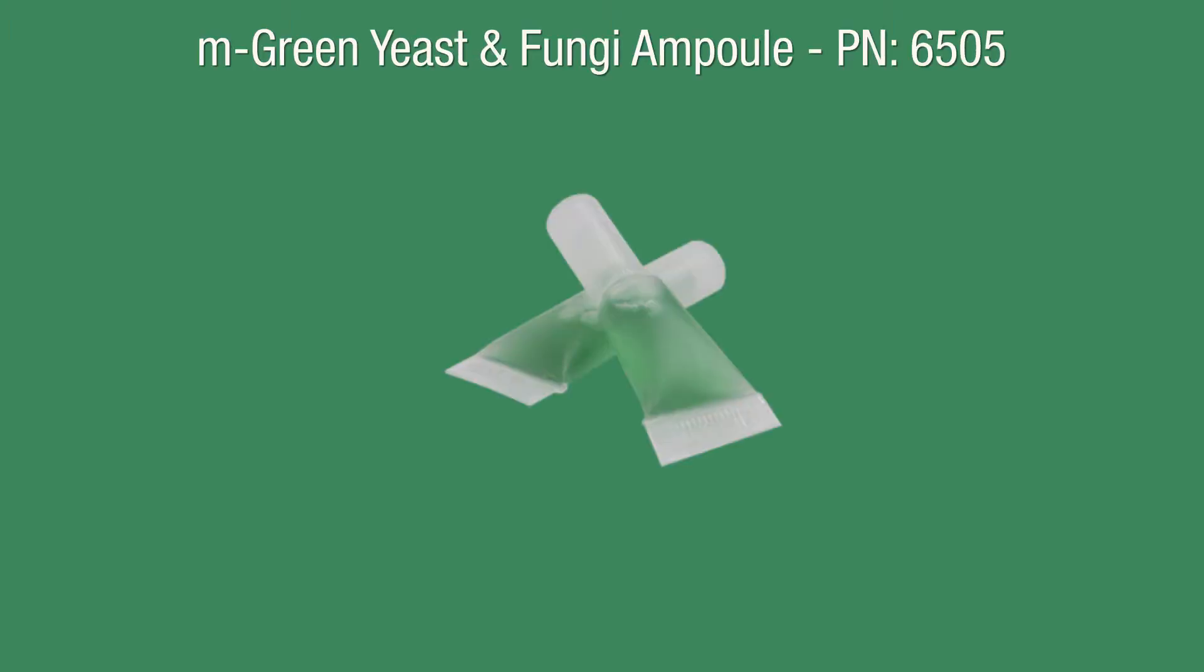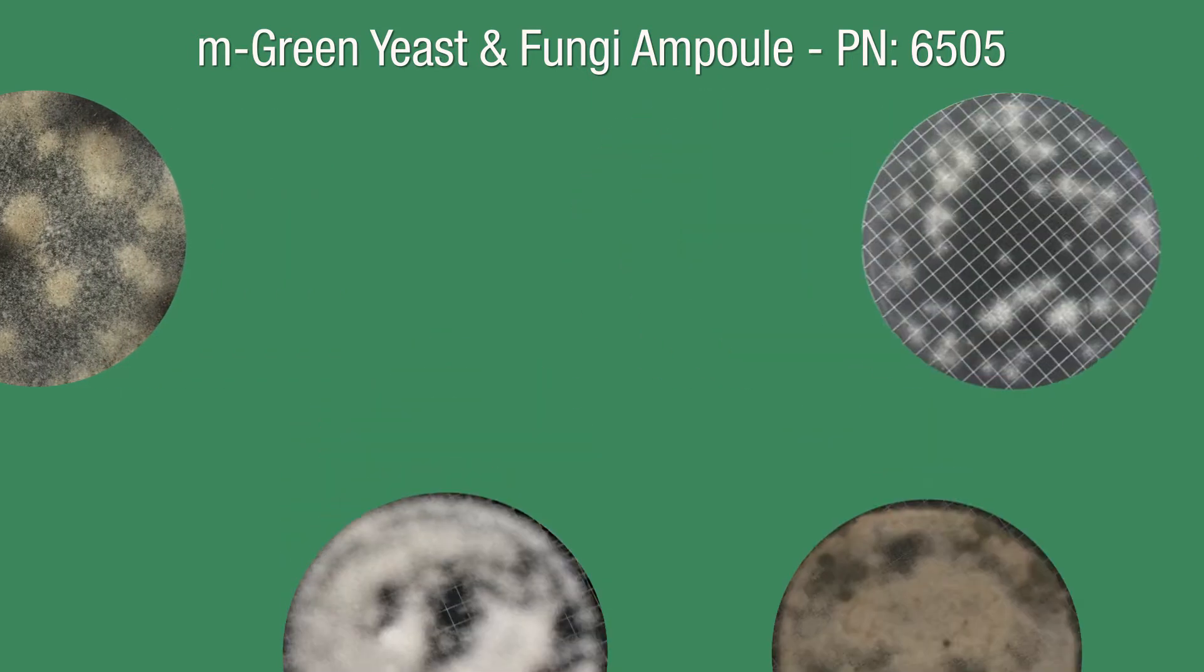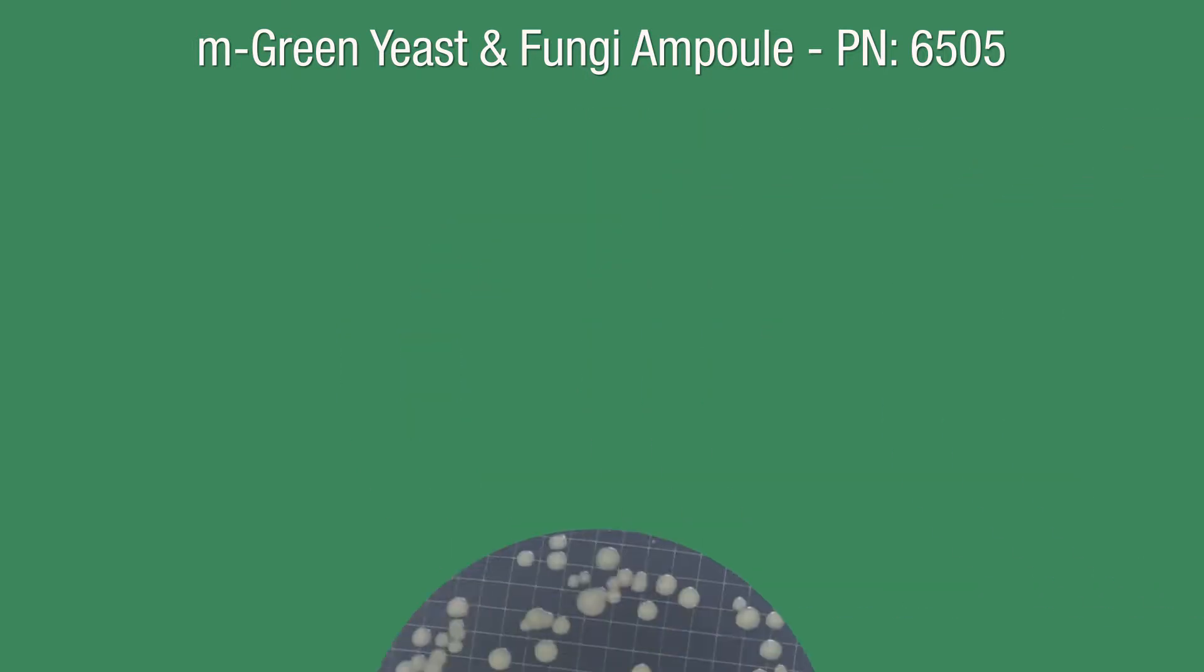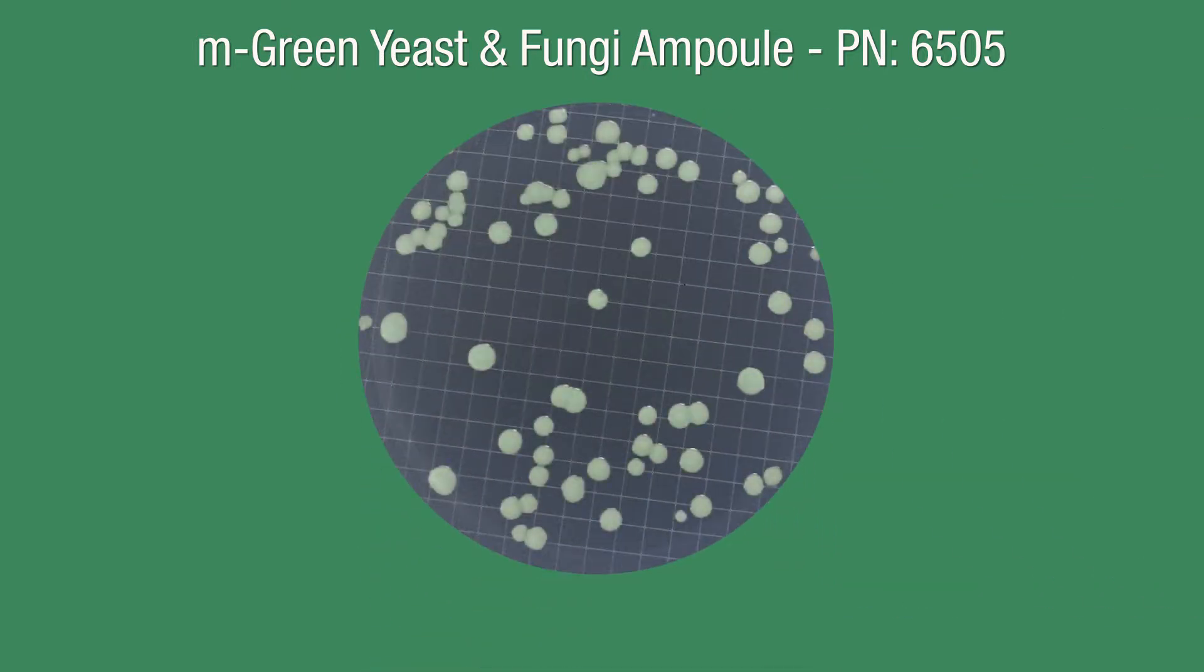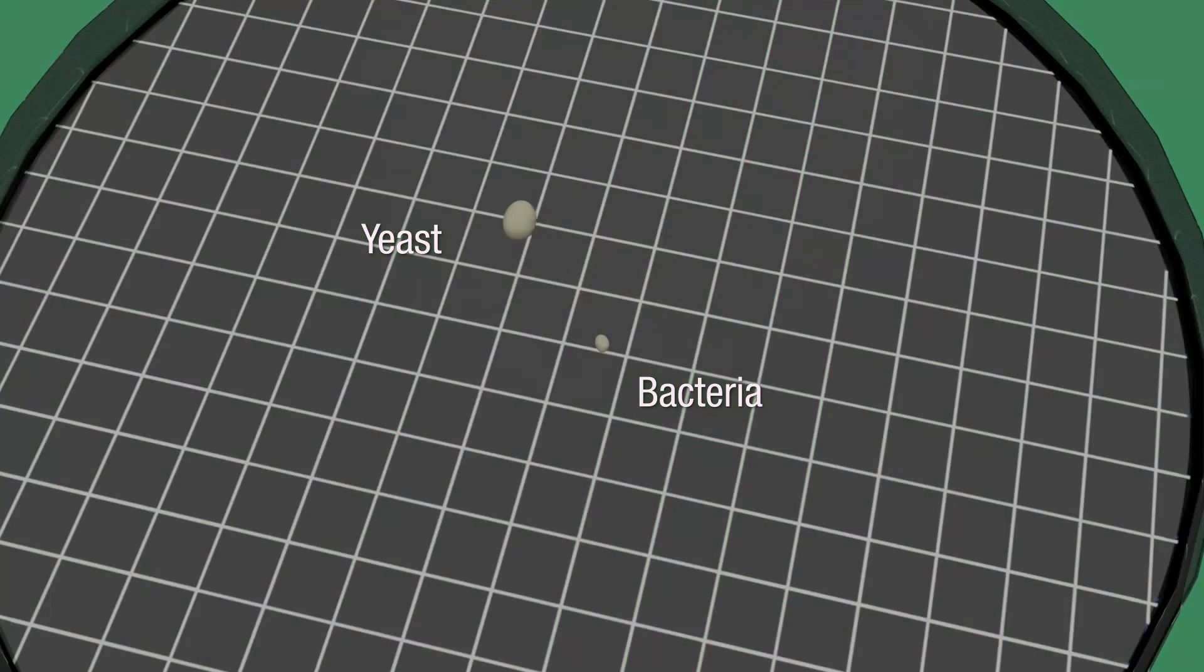M-green yeast and fungi ampule. This media is for the detection of yeast and fungi. To interpret results for yeast and fungi or mold, count all colonies. Mold appears fuzzy or sporulated. Yeast colonies appear cream colored and opaque. Some wild types exist that could elaborate their own color, for example, orange or pink. Some yeast colonies may develop a greenish hue if they absorb the dye from the medium.